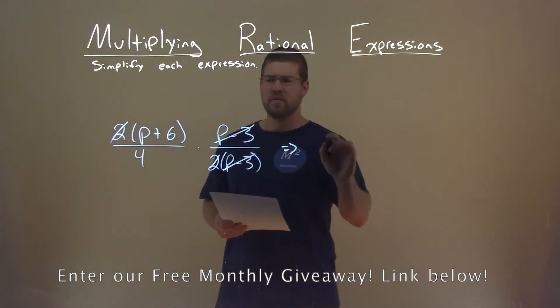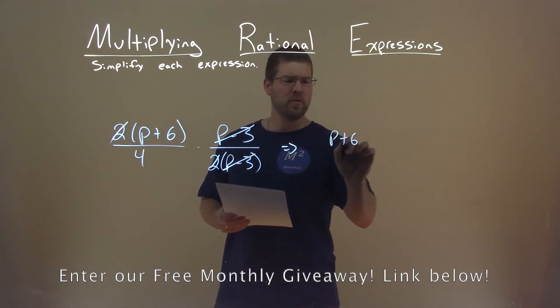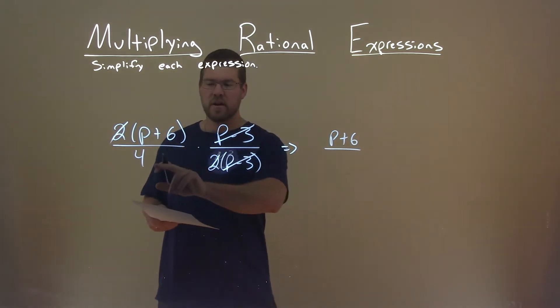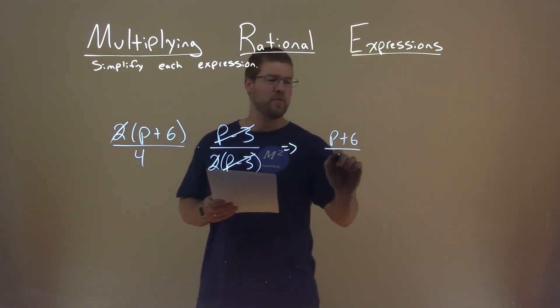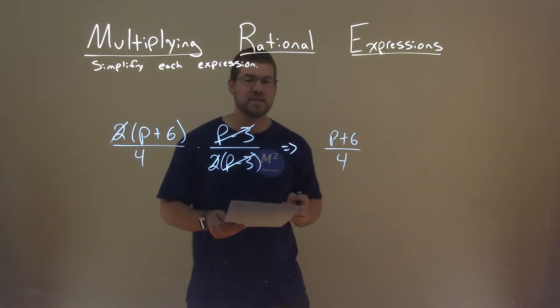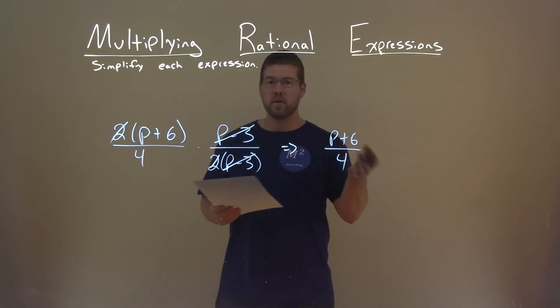So, bringing things over, I have p plus 6 in the numerator, divided by — well, the denominator is just a 4 — and so p plus 6 divided by 4 is our final answer.